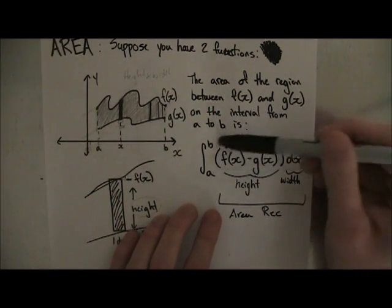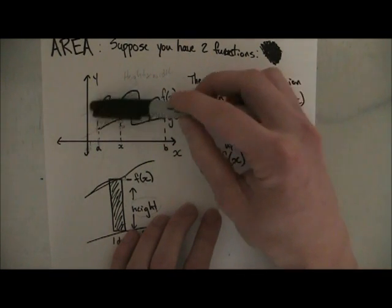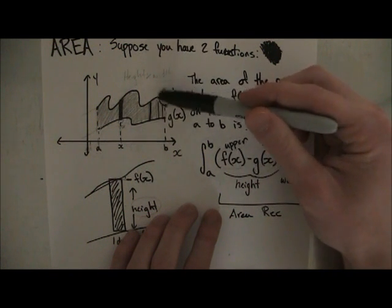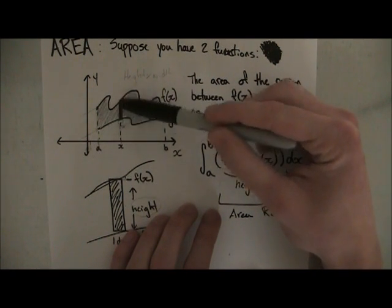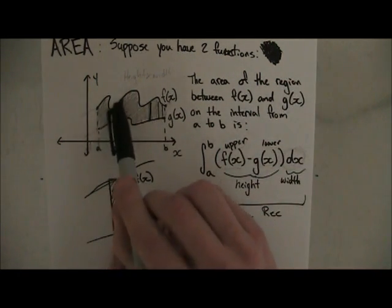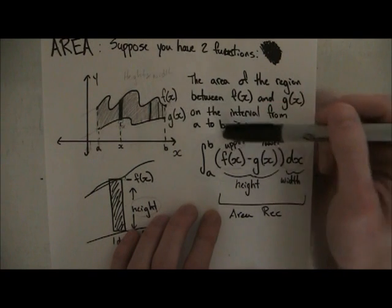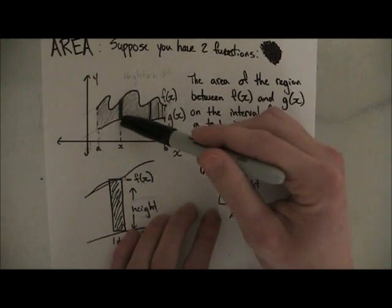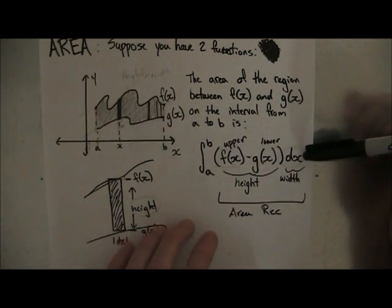Which is which? Well, your upper function always goes first. Your upper function is always the one that's on top of the other, or higher than the other, or has greater values than the other. As you can see right here, it's clear that f(x) is greater than g(x). Another way you can do this is you can draw your rectangle which attaches the two, and whichever function touches the top of your rectangle is your upper function. As you can see, our rectangle here - f(x) touches the top of our rectangle, so f(x) is our upper. We put f(x) first and then we subtract our lower one, which touches the bottom of our rectangle, minus g(x). Then we times it by dx, but dx is always part of the integral, so you don't have to worry about that.